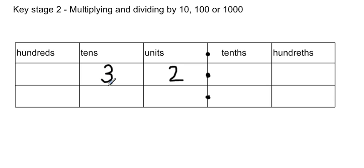So the tens move into the hundreds. We would have 300s. The units then move into the tens. And then the 0 moves from the tens into the units. So 32 multiplied by 10 is 320.